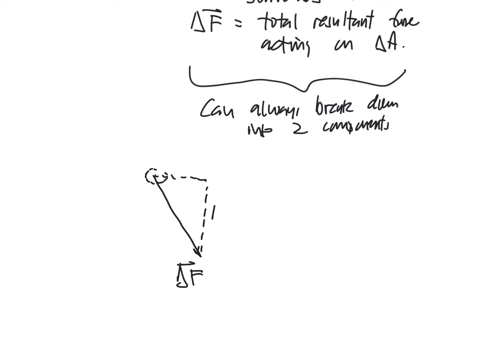So delta F can be broken down no matter what into a component that is normal and one that is tangential. Let me redraw that. If delta F is coming out like so, and our delta A is like this, we can always break it down. There is our delta F, and then we have the two components. I'm going to call this delta N, and I'm going to call this one delta V, capital V. This one is perpendicular to our area delta A, and delta V is parallel to delta A.